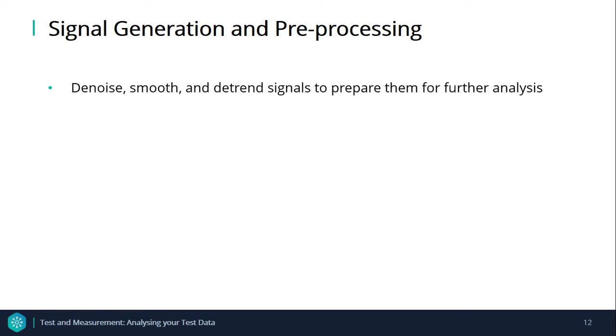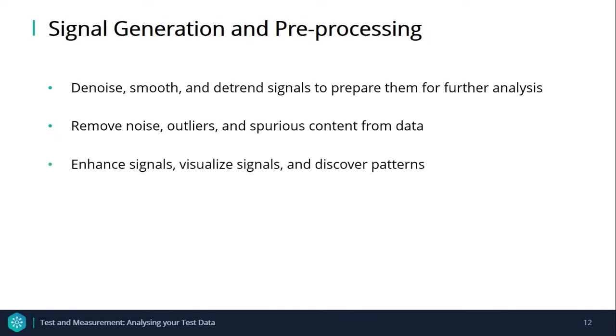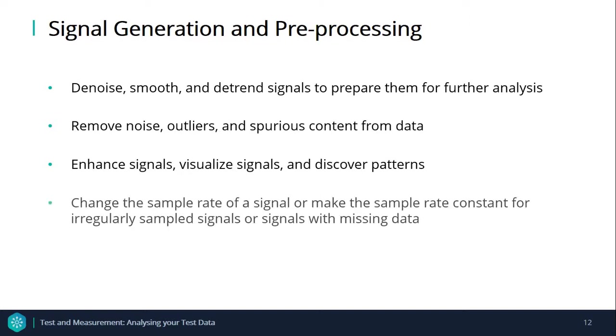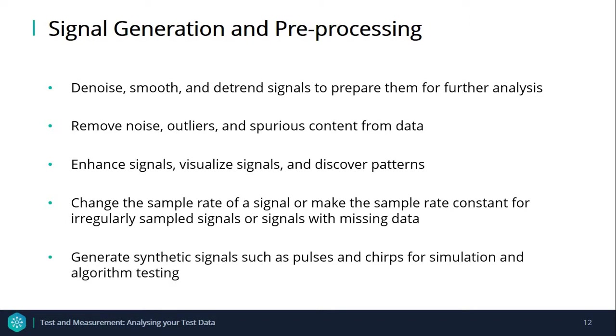It's worthwhile mentioning a few key points for signal generation and processing. You can denoise, smooth, and detrend signals to prepare them for further analysis, remove noise, outliers, and spurious content from data, enhance signals, visualize signals, and discover patterns, change the sample rate of a signal, or make the sample rate constant for irregularly sampled signals or signals with missing data. You can also generate synthetic signals such as pulses and chirps for simulation and algorithm testing.